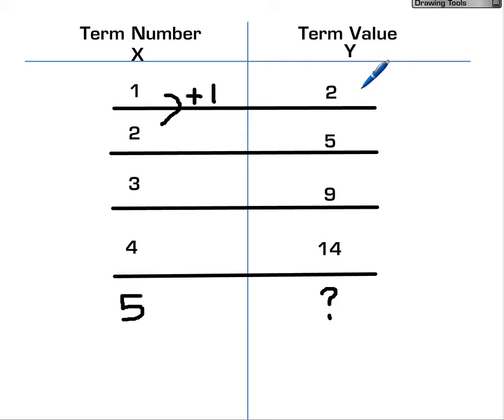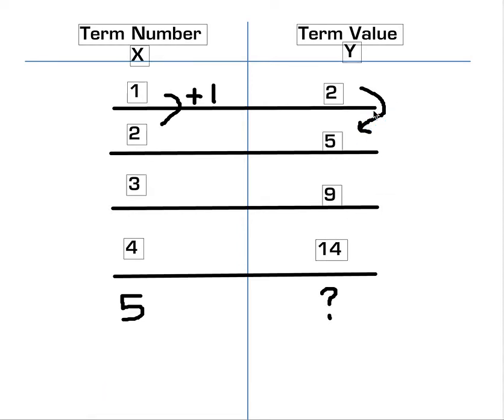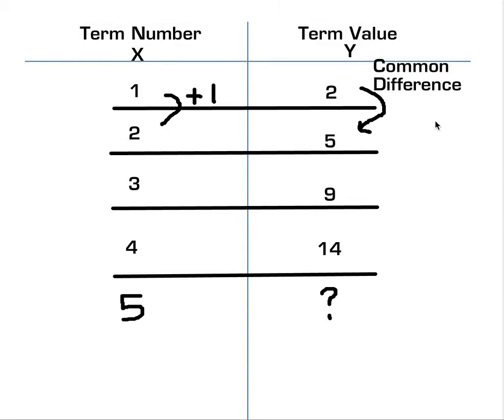That means the term values, as they are changing, we can inspect their common difference. That's an important term. Common difference. We can inspect their common difference, which is how much they're changing by each time.